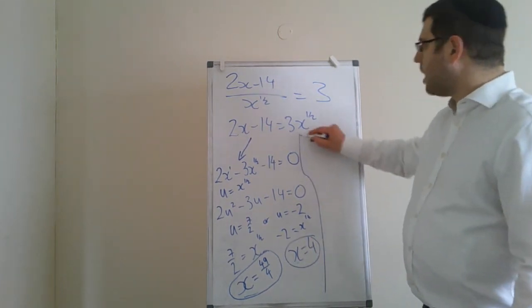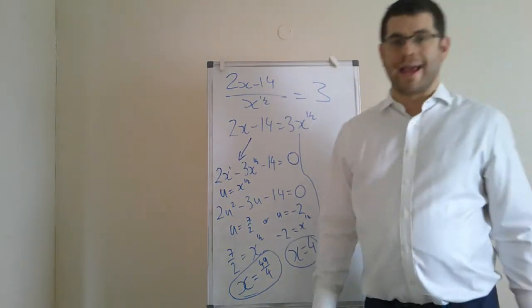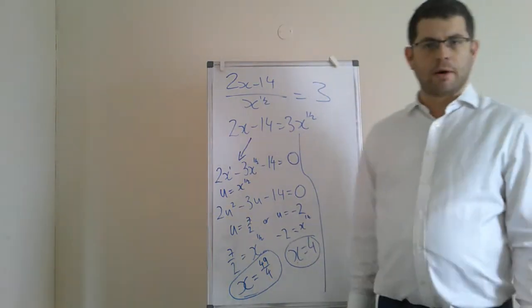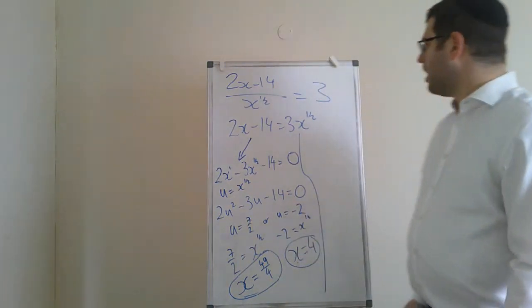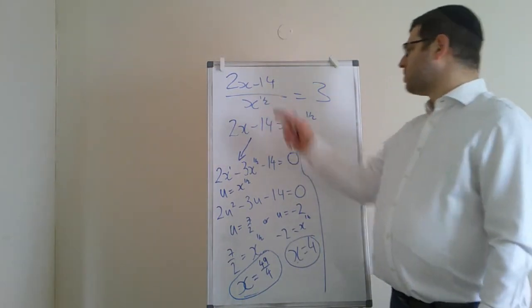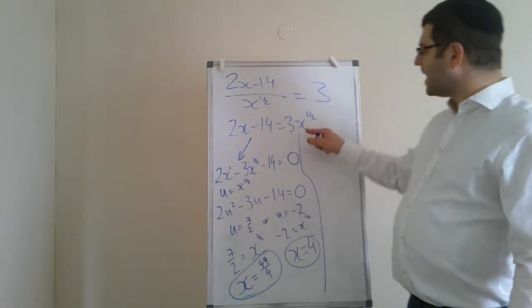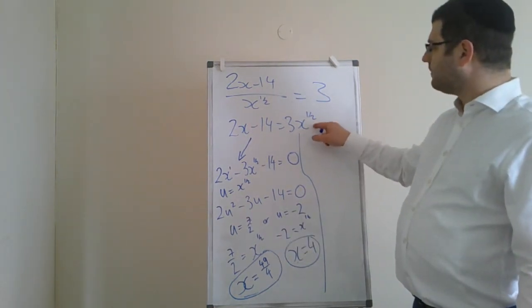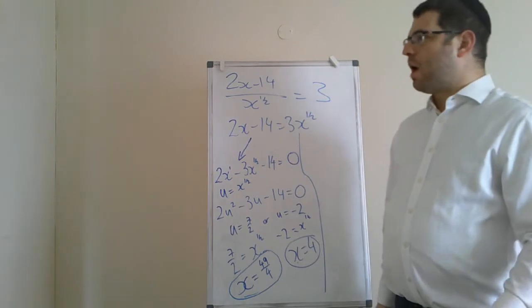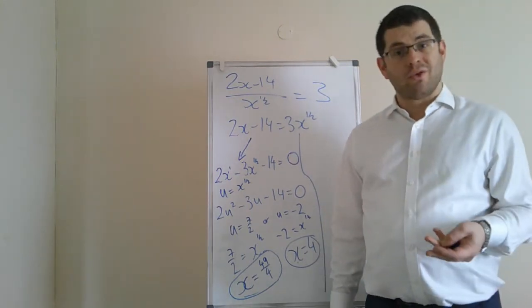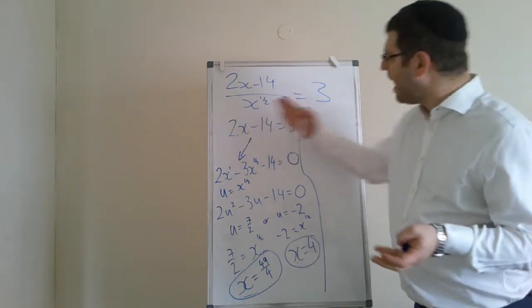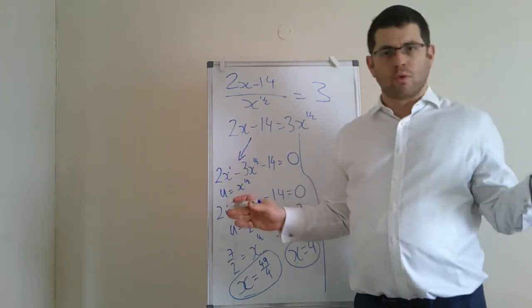Now, I promised you to do it another way. If we do it another way, we should get the same answers. Otherwise, something has gone wrong. So instead of bringing this across, what we could do is as follows. What do we not like about this equation? It's the x to the power of the half. So what is x to the power of the half? It's a square root. So it sounds like if I square both sides, then that problem will go away.